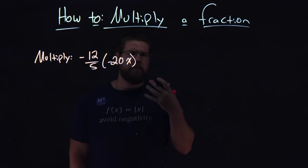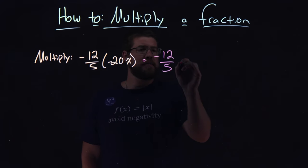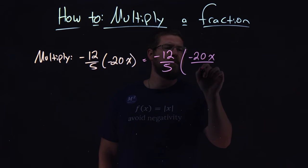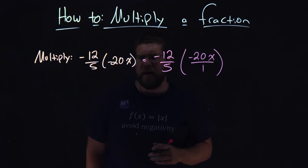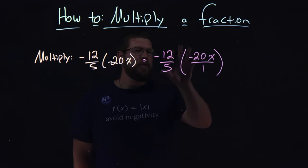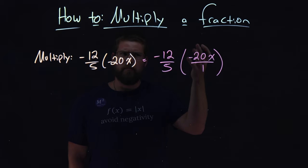Let's make this a little easier for us. Let's rewrite this: negative 12 over 5 times, we can put it in parentheses here, negative 20x over 1. This helps us break this down to really see what's going on, especially when we're not given this as a fraction. We can write it as a fraction.